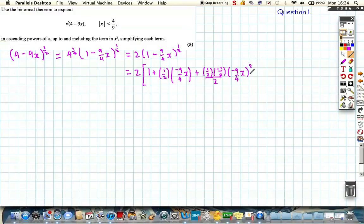And we need to go up to including the x cubed term, so we need one more. So let's add n times n minus 1 times n minus 2, all divided by 3 factorial, which is 6, multiplied by minus 9 over 4x cubed, plus the expansion can continue. We only want to go up to the x cubed term, but it does carry on.